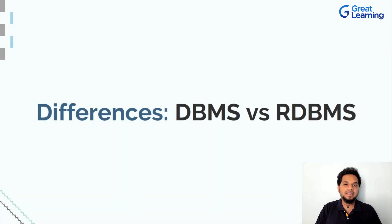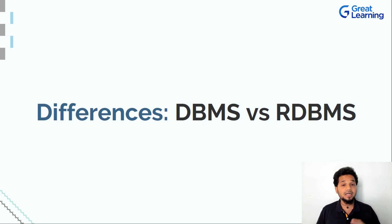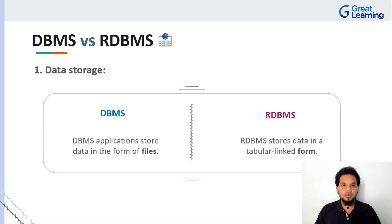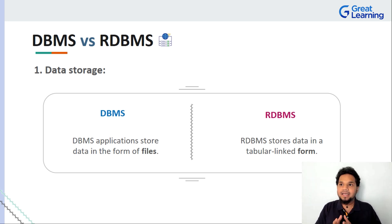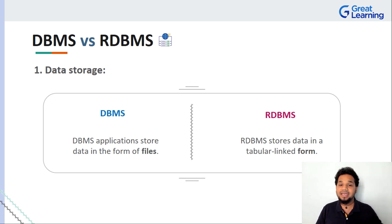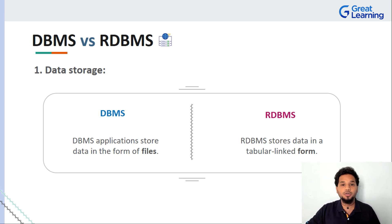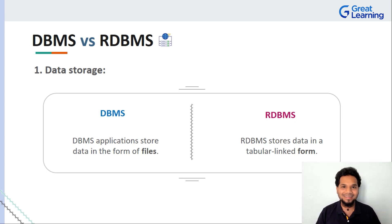Coming to the differences between a DBMS and an RDBMS, here are some of the most important points. The first point is data storage. A traditional DBMS actually stores its data in the form of files for an application to use — each individual file will be stored and used. Sometimes it can be stored as JSON files, other times as XML or other file formats.